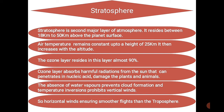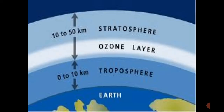90 percent of the ozone layer is present in the stratosphere. The ozone layer absorbs harmful radiation from the sun that can penetrate and damage nucleic acid, plants, and animals. The absence of water vapors prevents cloud formation, and temperature inversions prohibit vertical winds. The presence of horizontal winds ensures smoother flights in this region compared to the troposphere. A major ozone portion is present between the troposphere and stratosphere.